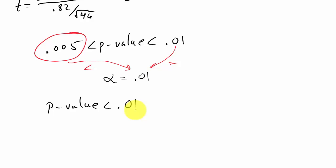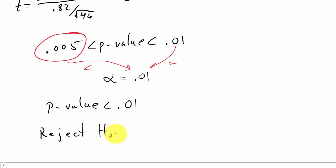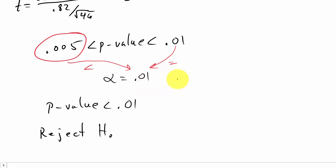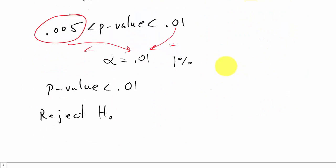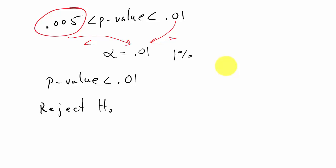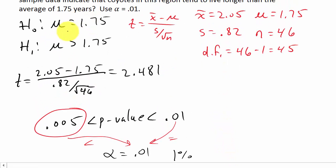Since the p-value is less than alpha, we reject the null hypothesis H naught. At the 1% level of significance — 0.01 is the same as 1% — the sample data of the 46 adult coyotes indicate that the average age of coyotes in that region is higher than 1.75 years, because we rejected the null hypothesis and made the claim that it was greater than 1.75.